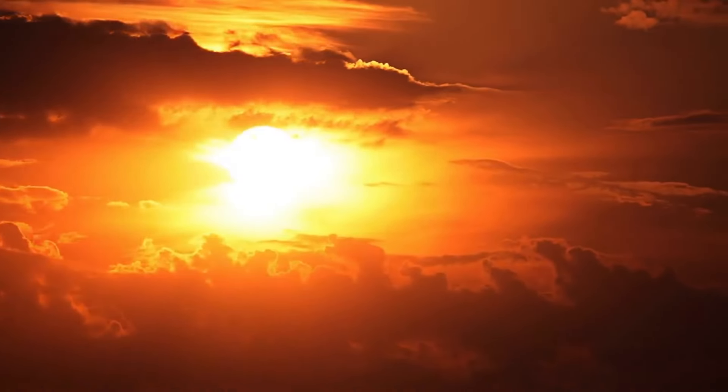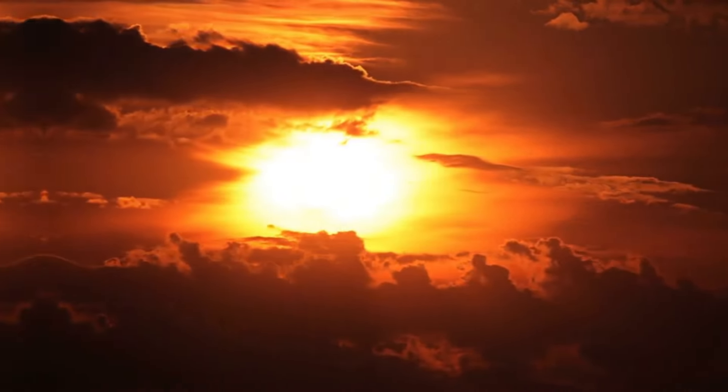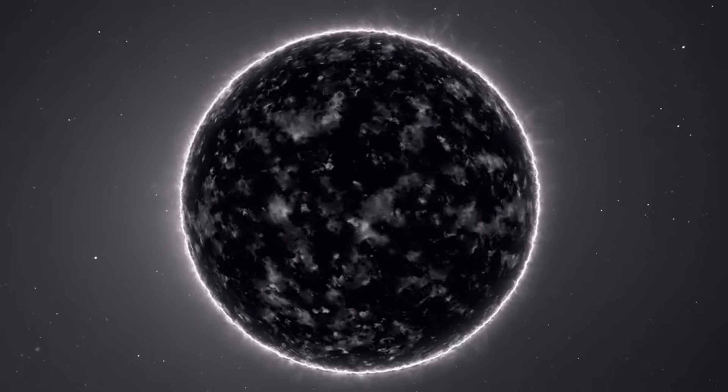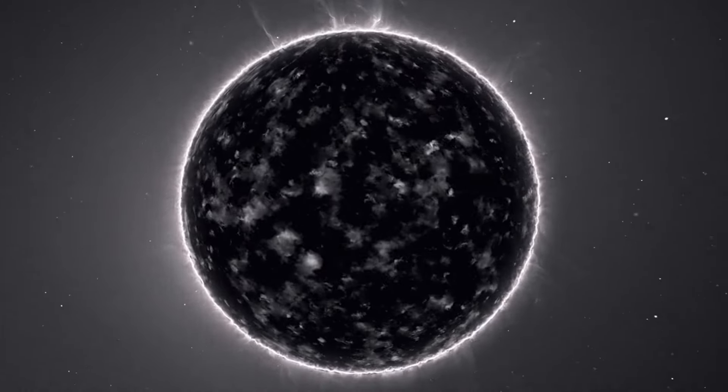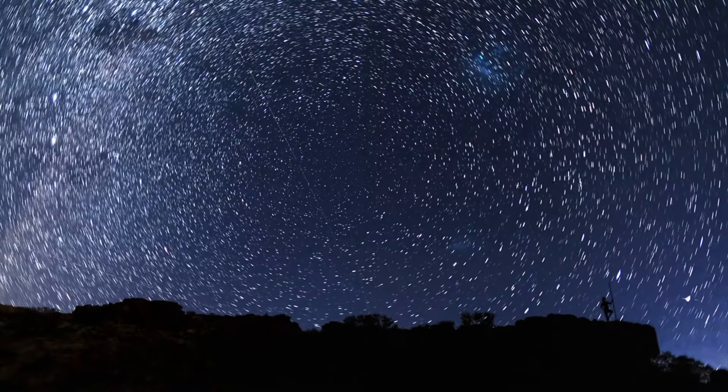For stars like our sun, the white dwarf stage is the final chapter. Slowly cooling and fading, these remnants can no longer sustain fusion and will eventually become cold, dark objects known as black dwarfs. But the story doesn't end there.